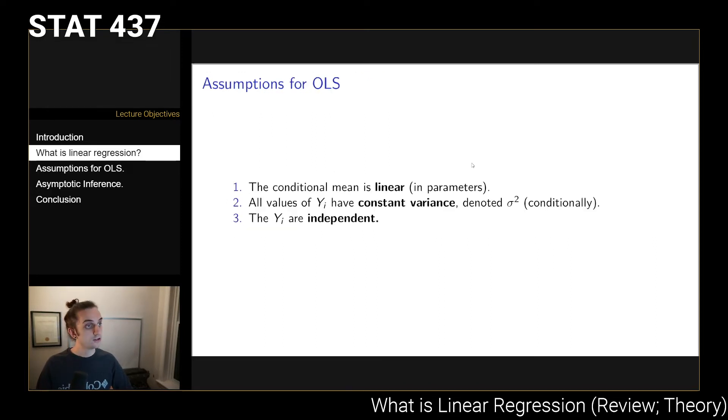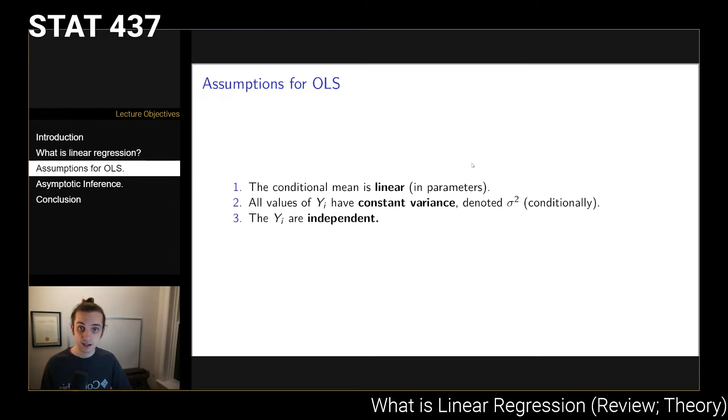Now, in order to perform OLS, there's several assumptions that we need to make, three key assumptions. The first is that we're assuming that the conditional mean is linear in the parameters. And in the parameters is an important piece there. What we mean by that is that you could have x squared in the model, you could have the log of x, you can transform the variables any way that you want, but you need to make sure that beta is included only in terms of linear terms.